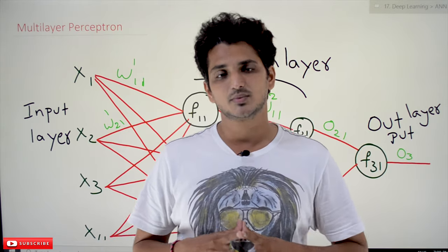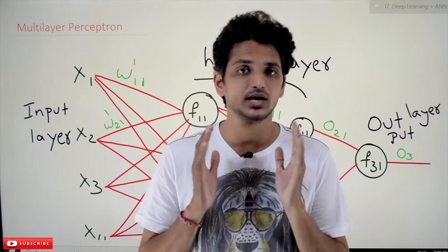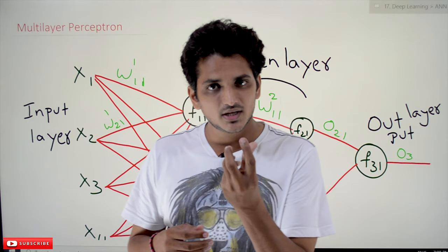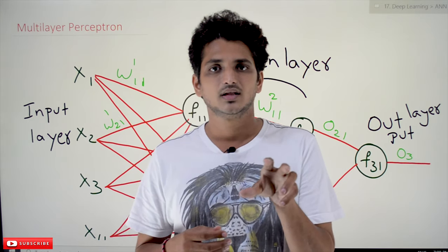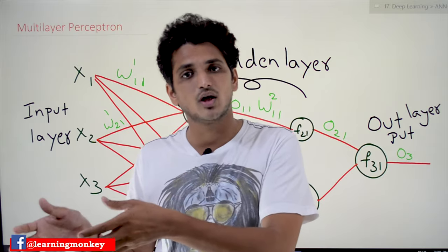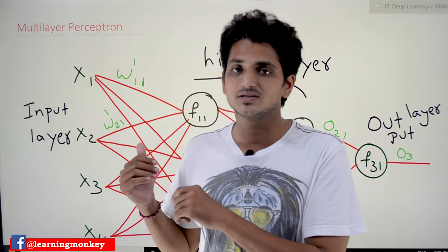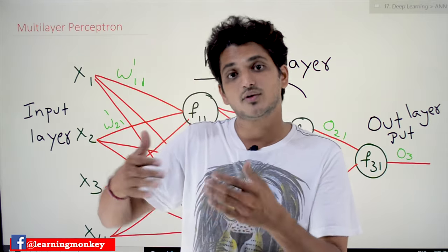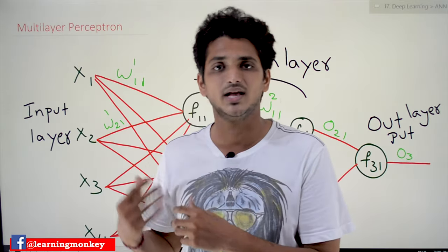Coming to multi-layer perceptron — in our first class when we discussed about the central nervous system and human nervous system, one perceptron acts exactly the same as a neuron. The output we get from one neuron is connected to the next neuron. Multi-layer perceptron works exactly as one layer connecting to the next layer, just as we discussed in the central nervous system.